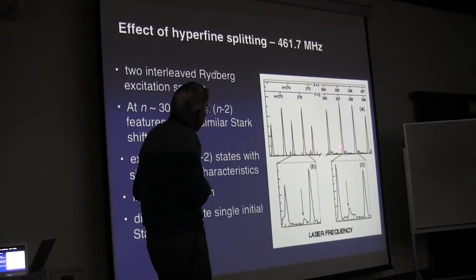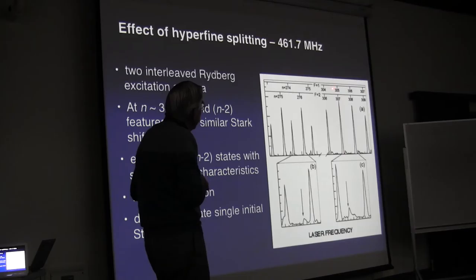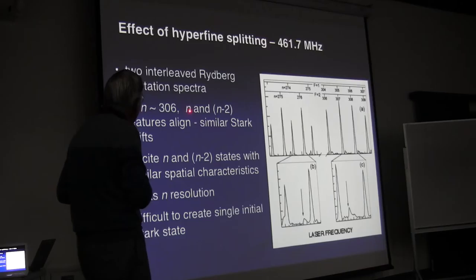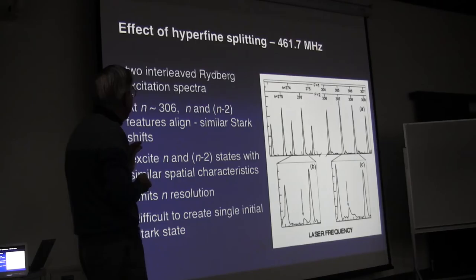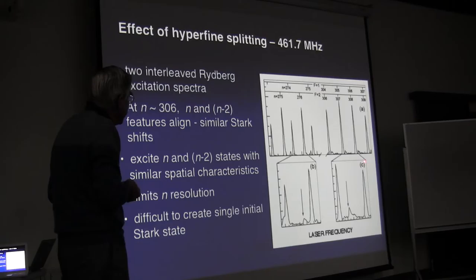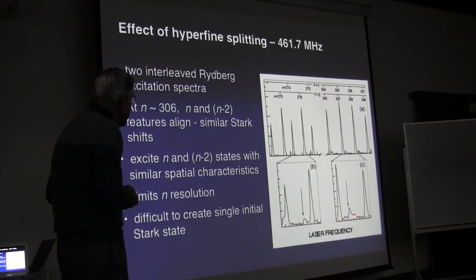However, if you go to about n equals 305, you find this collapses to a single series of excitation lines. That results because in this vicinity, excitation of n equals 305 from F equals 1 corresponds to excitation of 307 from F equals 2. So you simultaneously excite n and n minus 2 states. These have similar spatial characteristics and similar Stark shifts, so applying an electric field gives just the 1D-state-derived excitation feature, producing quasi-one-dimensional Rydberg atoms — the only problem being that you have two values of n.